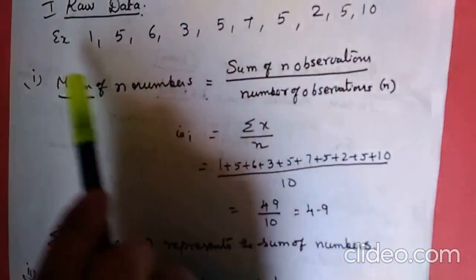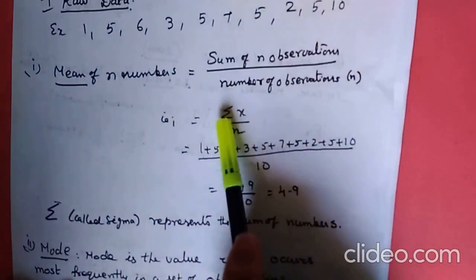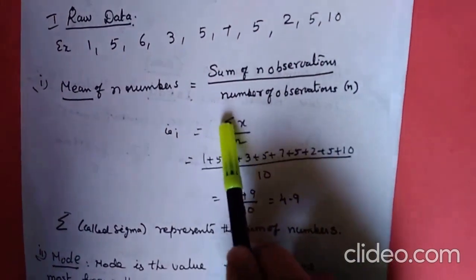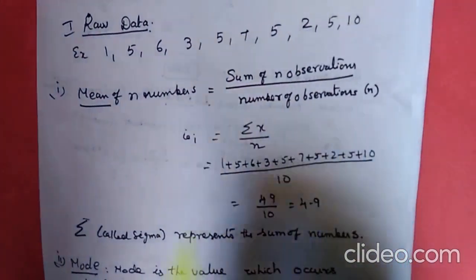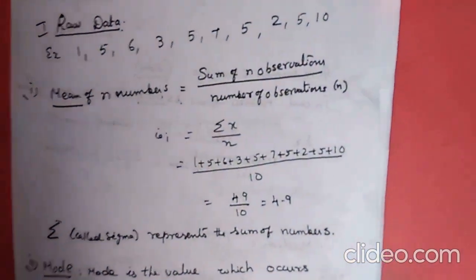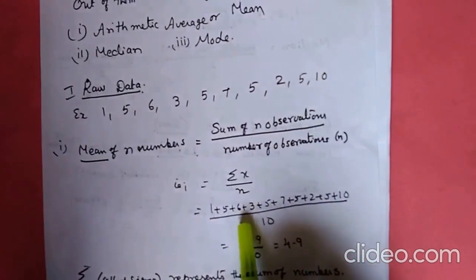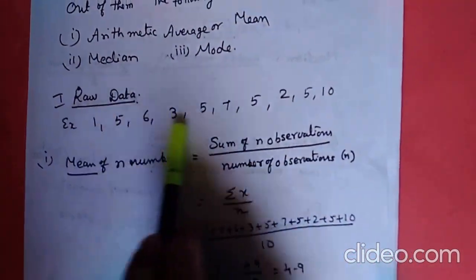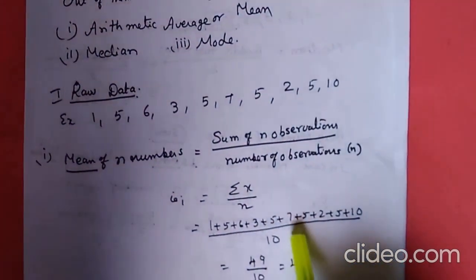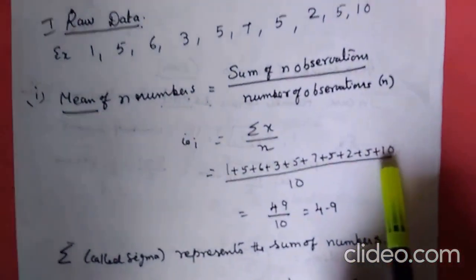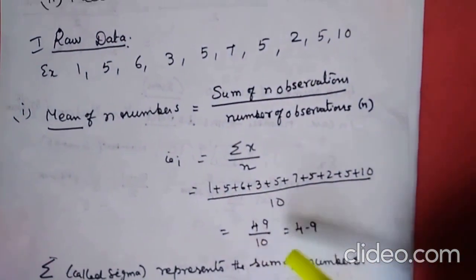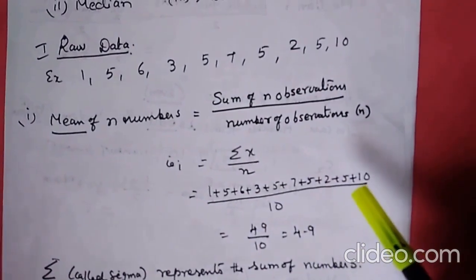Sigma x represents the sum of all x values. Sigma is the symbol for sum. So sigma x by n means you are adding all the numbers and dividing by the count. There are 10 numbers: 1+5+6+3+5+7+5+2+5+10, divided by 10. The total is 49 divided by 10, so the mean is 4.9.